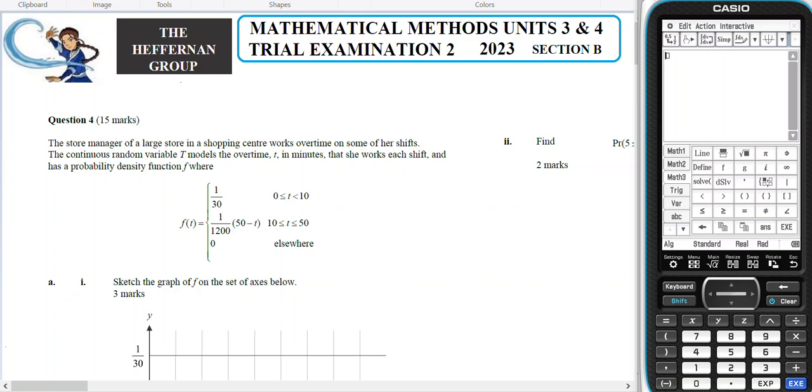Okay, question number four is a probability question, and it involves initially a hybrid function that becomes a continuous distribution.